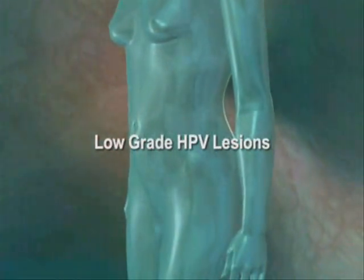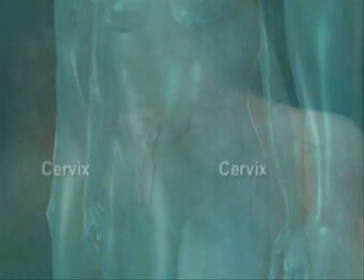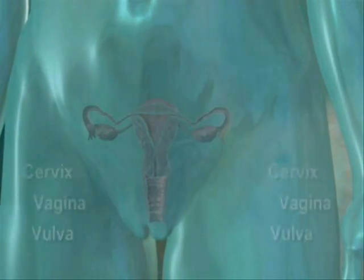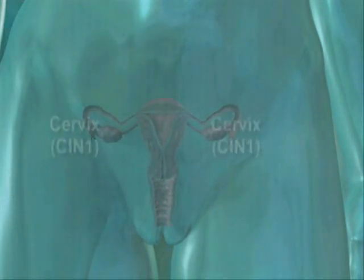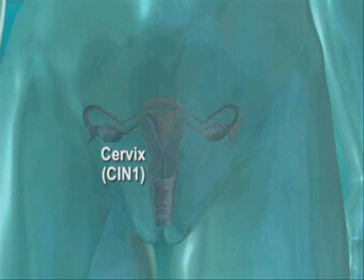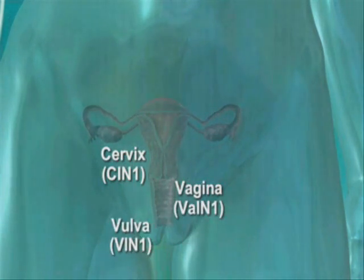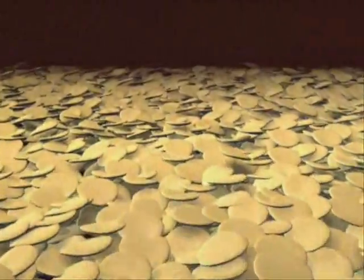Low-grade intraepithelial neoplasia in the mucosa of the cervix, vagina, or vulva are described histologically as Cervical Intraepithelial Neoplasia Grade 1, Vaginal Intraepithelial Neoplasia Grade 1, and Vulvar Intraepithelial Neoplasia Grade 1. These lesions may be caused by infection with low-risk as well as high-risk HPV, which undergo the processes previously described in the life cycle of HPV.